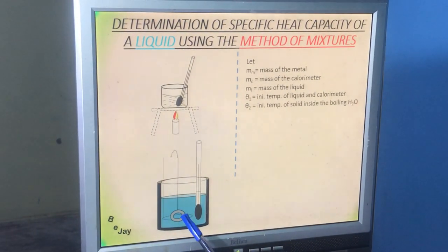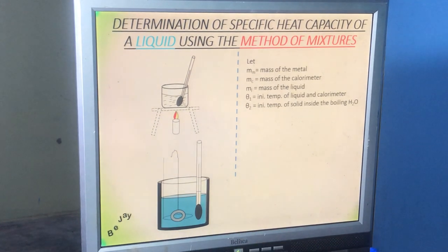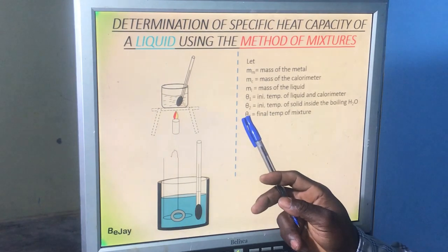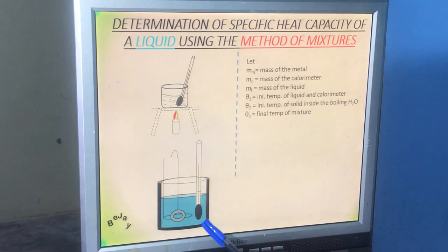We have a metal at high temperature — say around 98 degrees Celsius from the boiling water — and a calorimeter and liquid at a lower temperature, say 20 degrees Celsius. While the metal loses heat, the liquid and calorimeter gain it. This process continues until thermal equilibrium is reached, at which point the thermometer reading becomes steady. We record that final temperature as theta 3 — the final temperature of the mixture of solid, liquid, and calorimeter.